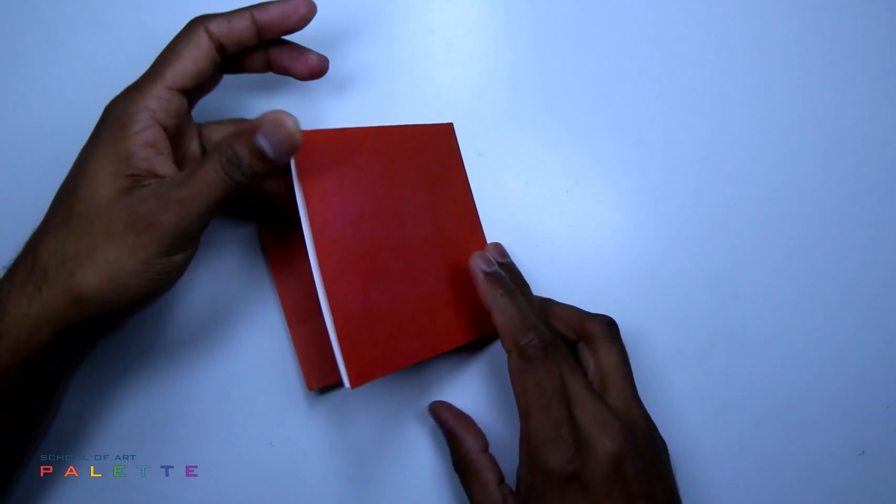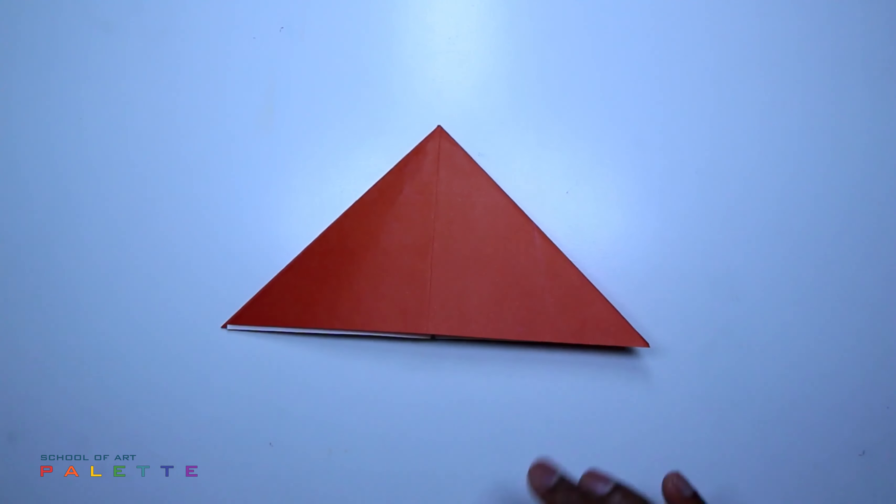Then, here you press it and make it like this, like triangle shape. Other side also, keep it straight and press it. We got triangle shape.